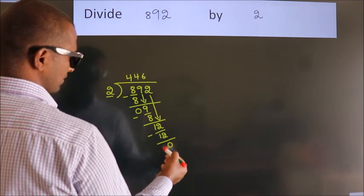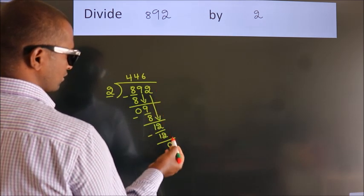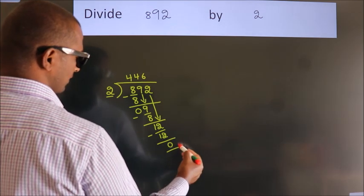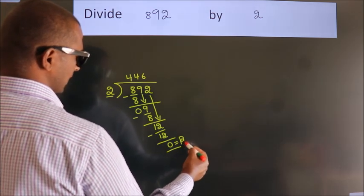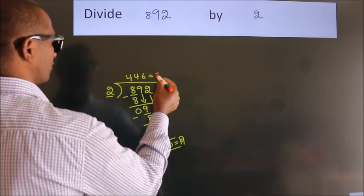After this, no more numbers to bring it down. So we stop here. This is our remainder. This is our quotient.